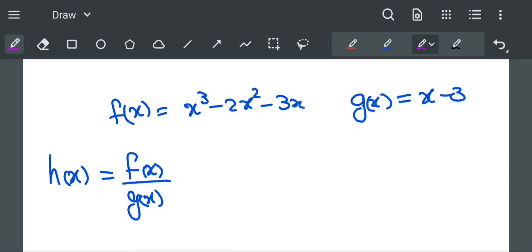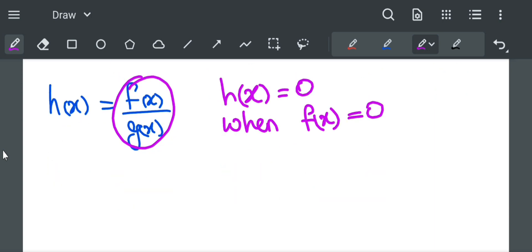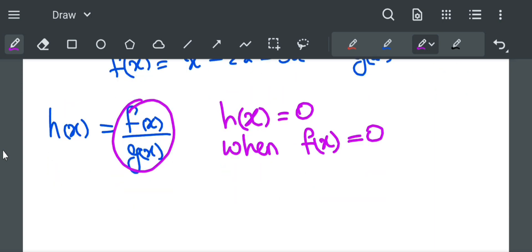We can see here that h of x is equal to 0 when f of x is also equal to 0. So if we put f of x equal to 0, then this whole term will get 0. So first we will find f of x equals 0.